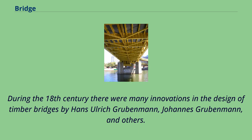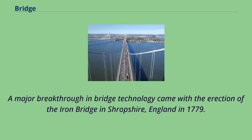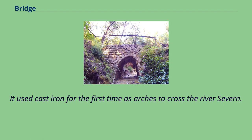During the 18th century there were many innovations in the design of timber bridges by Hans Ulrich Grubemann, Johannes Grubemann, and others. The first book on bridge engineering was written by Hubert Gautier in 1716. A major breakthrough in bridge technology came with the erection of the Iron Bridge in Shropshire, England in 1779, which used cast iron for the first time as arches to cross the River Severn.